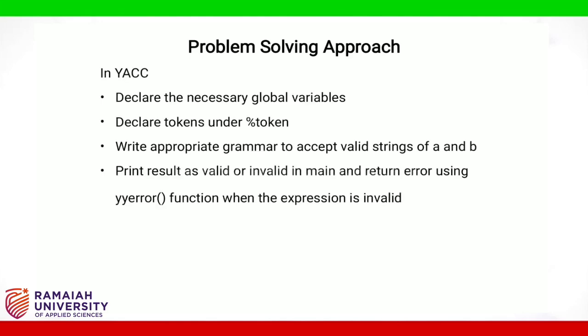In Yacc, declare the necessary global variables, declare tokens under %token, write appropriate grammar to accept valid strings of A and B, print result as valid or invalid in main, and return error using yyerror function when the expression is invalid.